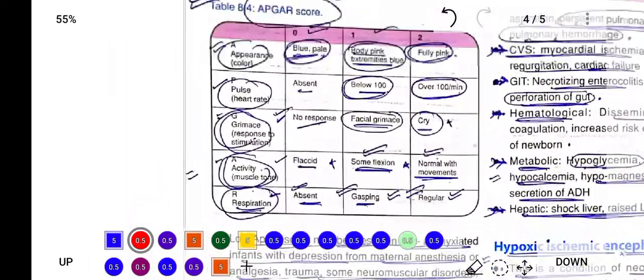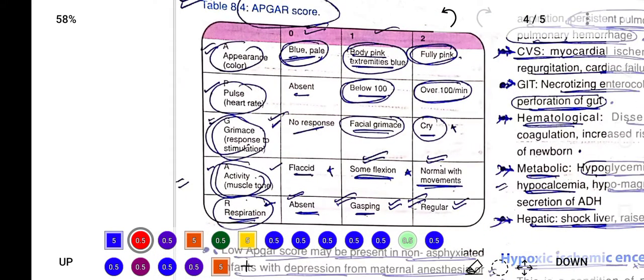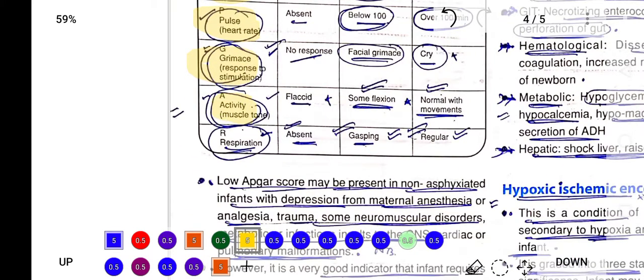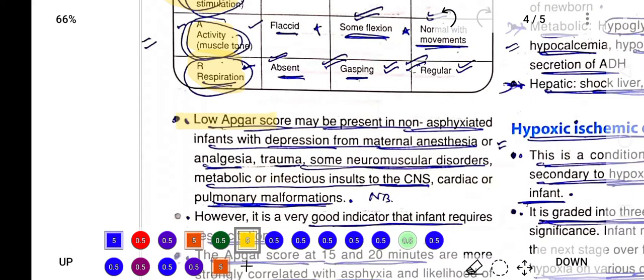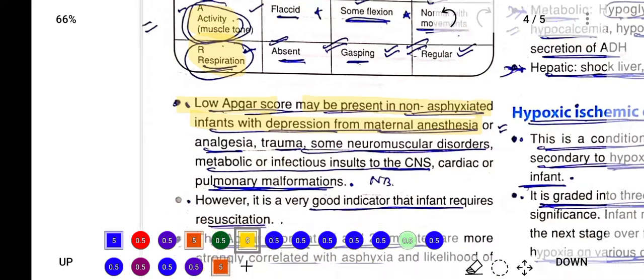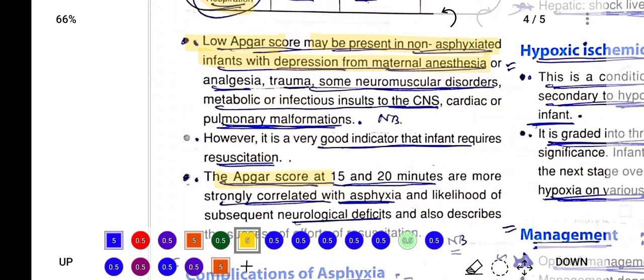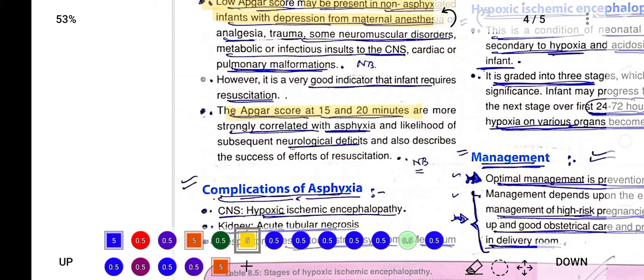We will also perform the APGAR score for the baby. APGAR score assesses the appearance, pulse rate, grimace, activity, and respiration. If the APGAR score is low, it may represent a non-asphyxiated infant with depression due to maternal anesthesia. APGAR score will help rule out birth asphyxia, and in this way we can diagnose it.